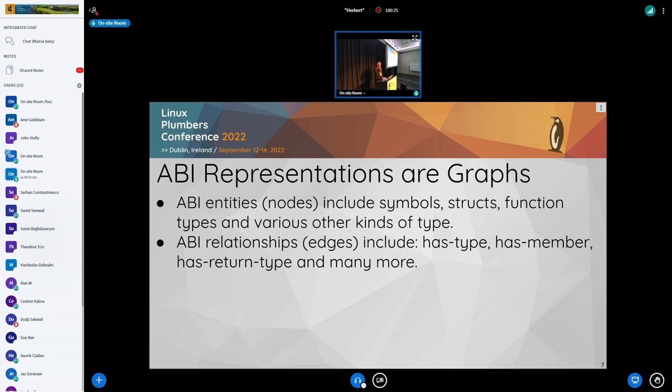So this is how I feel things are. ABI representations are graphs. We have nodes for symbols, structs, functions, all sorts of other things, and we have all sorts of different kinds of edges.